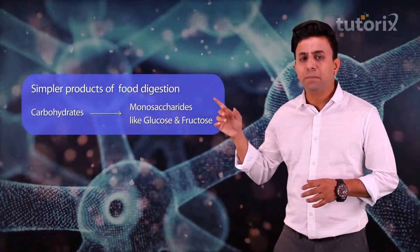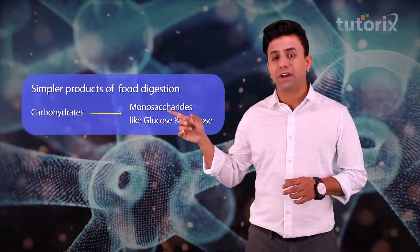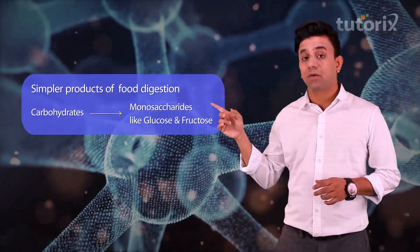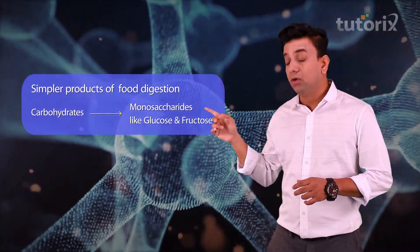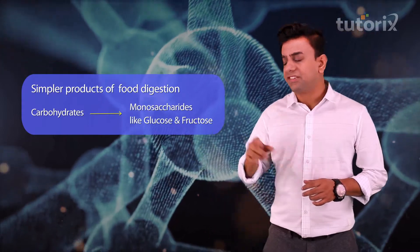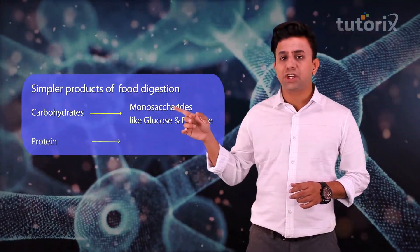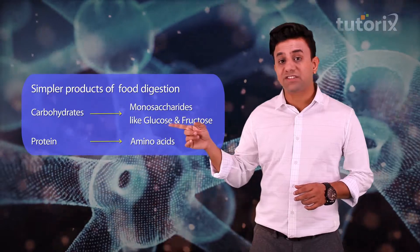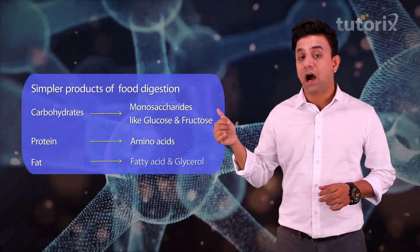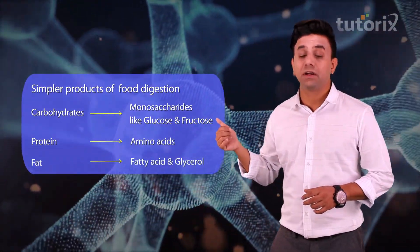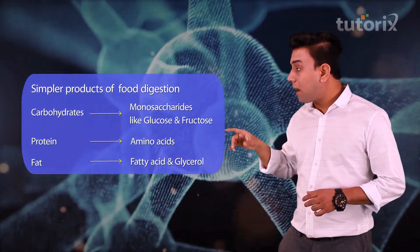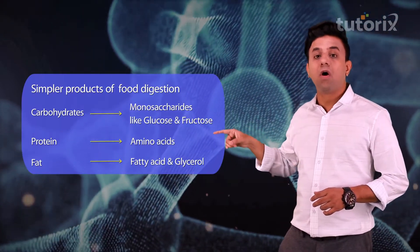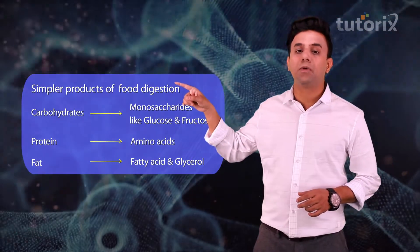Before we start with the absorption of molecules, let me remind you that the simpler products of carbohydrate digestion are the monosaccharides like glucose and fructose. The simpler products of protein digestion are the amino acids, and the simpler products of fat molecules are fatty acid and glycerol.